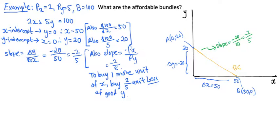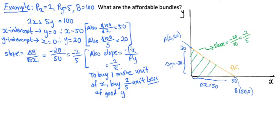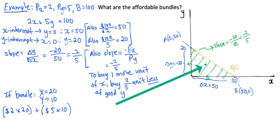To answer the original question, all the affordable bundles are in the shaded green area. For example, the consumer could purchase 20 units of X and 10 units of Y, but that would cost only $90. All the bundles on the budget line, however, will cost exactly $100.